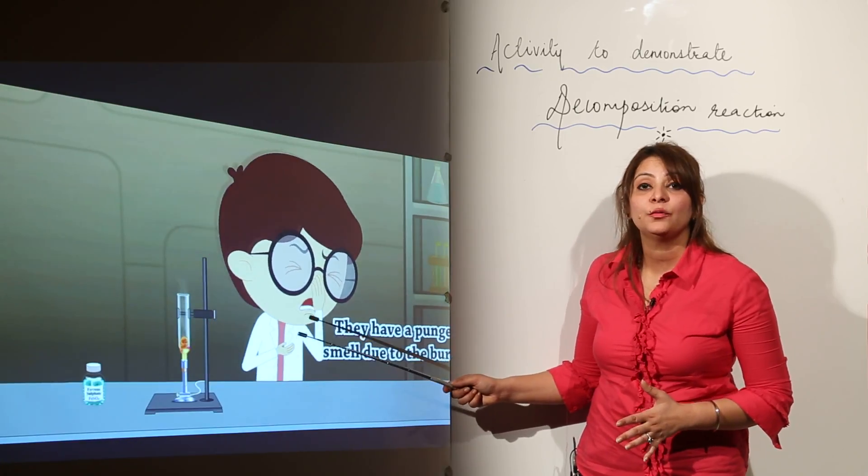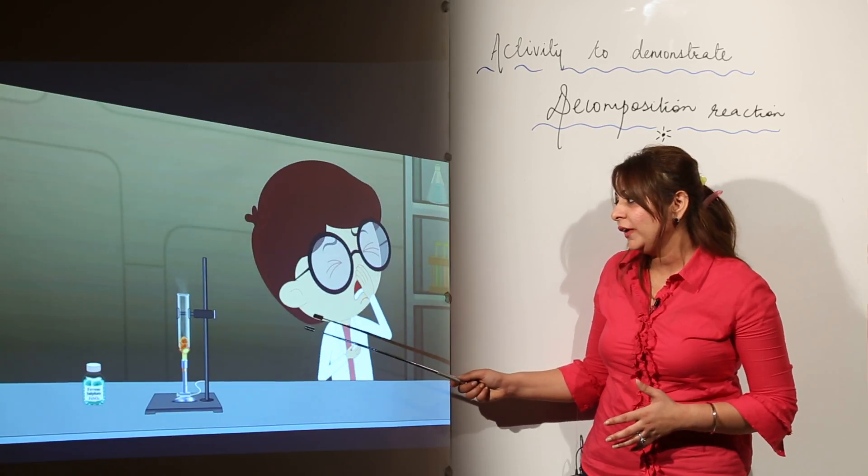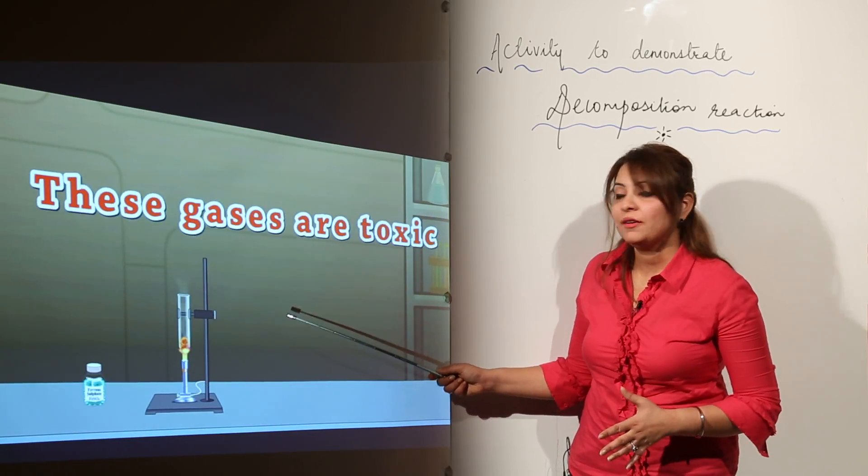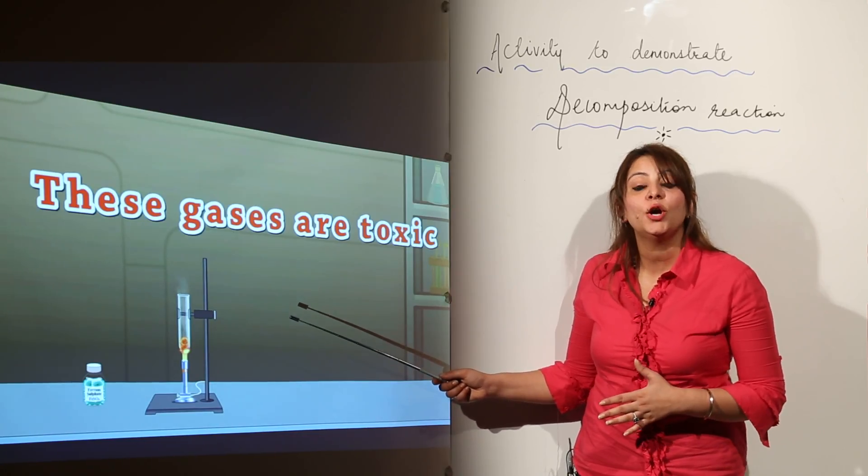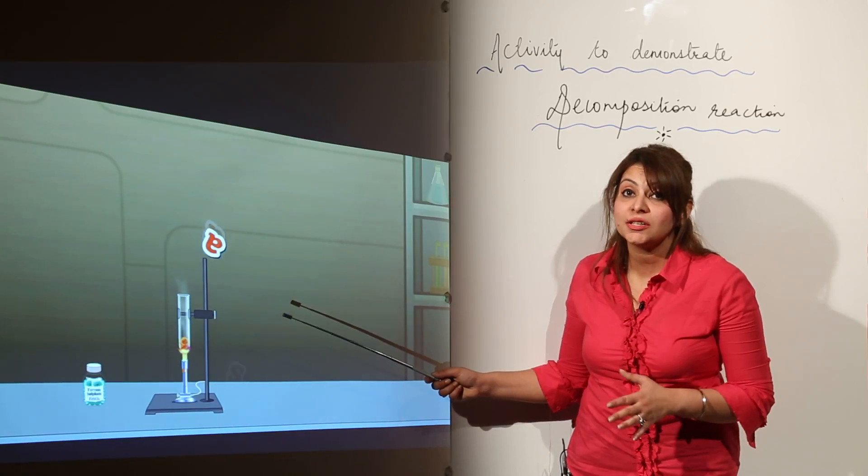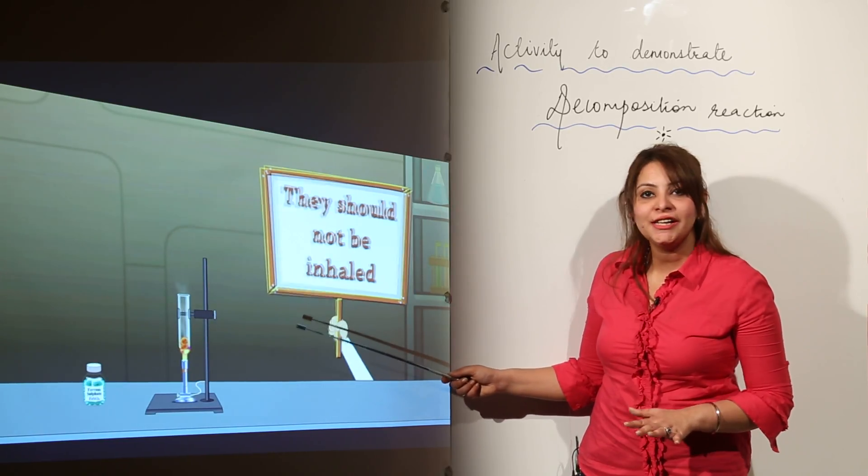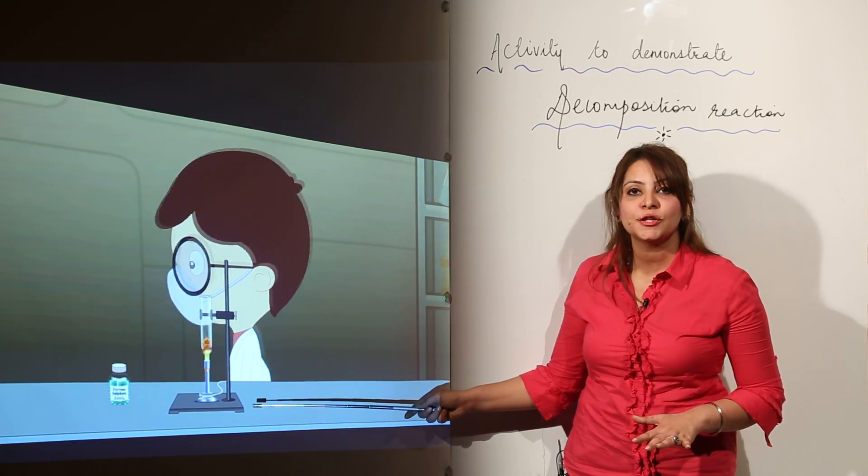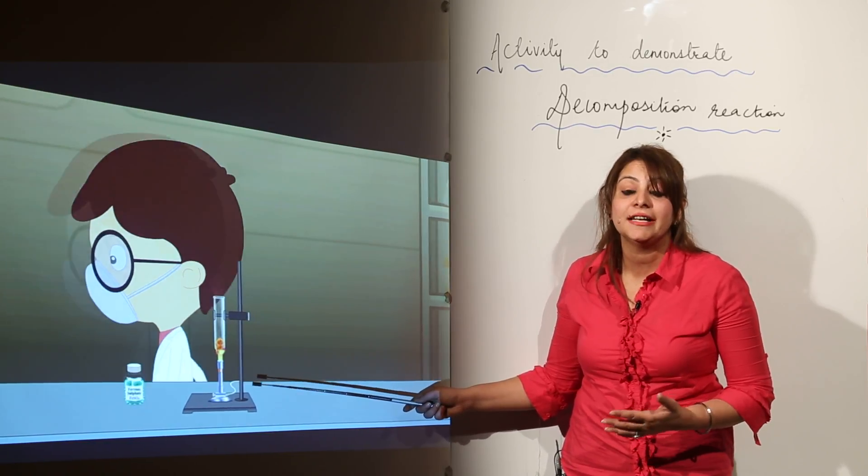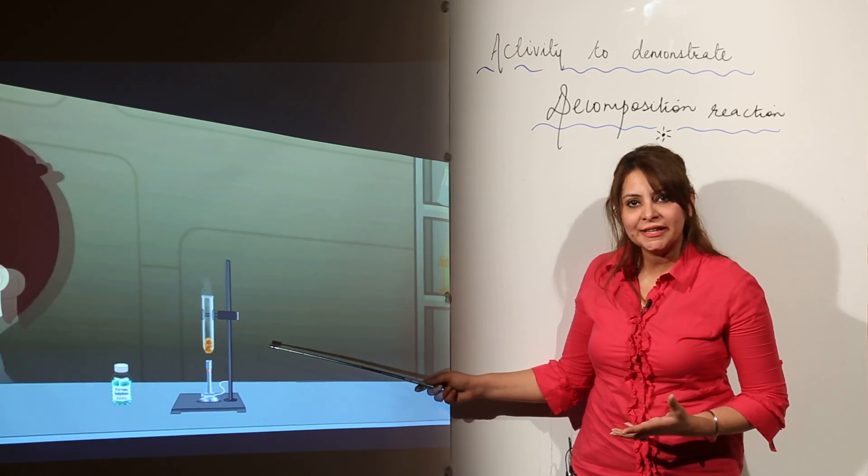When we heat FeSO4 crystals, we get Fe2O3, and along with that we get SO2 and SO3. Those gases are very toxic and should not be inhaled at all. This activity demonstrates how the crystals are decomposing when we heat them. Now we will stop heating because we have already obtained the compound Fe2O3 which is reddish brown in color.